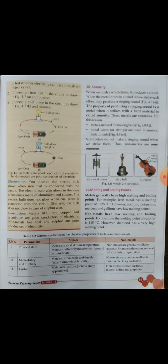Conclusion of Activity 2: metals like iron, copper, and aluminium are good conductors of electricity. Non-metals like coal and sulfur are poor conductors of electricity. In diagram 4.7A, when the iron nail conducts electricity the bulb turns on, and in diagram B, when coal is used the bulb does not turn on — showing non-metals are poor conductors.